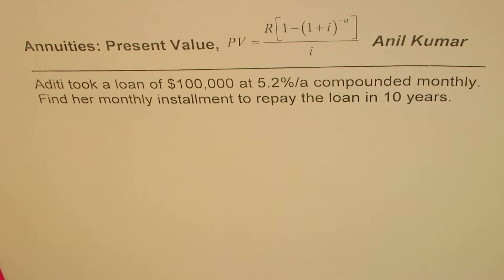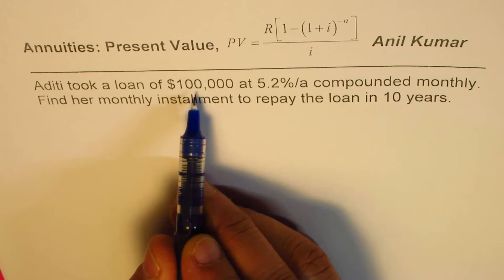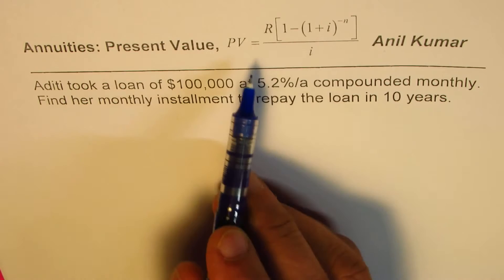The loan taken is the present value and we need to find the monthly installment, so we can use the present value formula. Present value equals R times [1 - (1+i)^(-n)] divided by i.